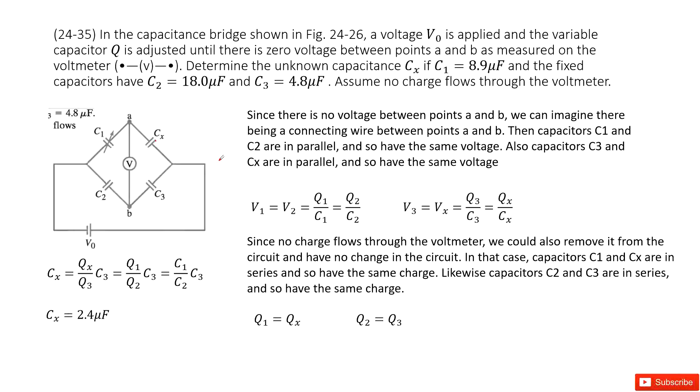So you can see we have this capacitance bridge connected with the battery. The voltage is known. This capacitance bridge has capacitors C1, C2, C3, and CX. C1, C2, C3 are given. We need to find the capacitance for CX.